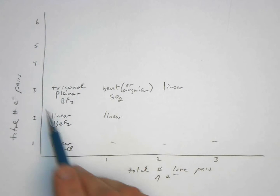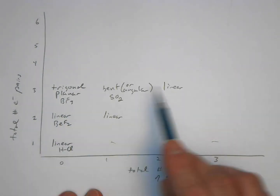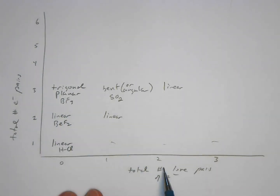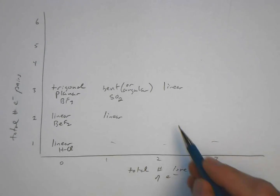One example of bent geometry would be the SO2 molecule. And if we have three pairs of electrons around the central atom and two of them are lone pairs, we'd have a linear molecule — though I can't think of a specific example of that.